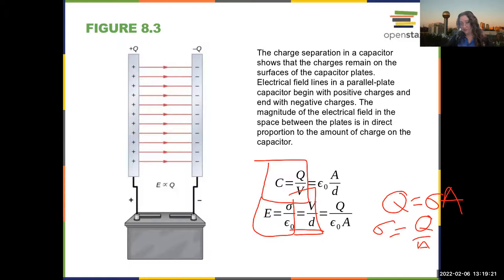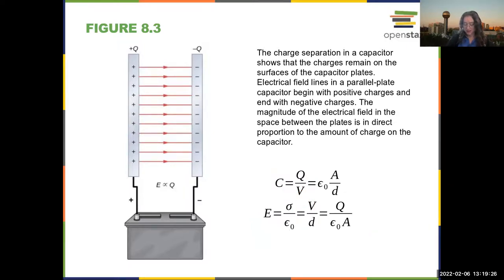The electric field is the voltage divided by the distance, so you can derive this equation. This is specifically for a parallel plate capacitor, whereas C = Q/V is the definition of capacitance. The electric field is proportional to the charge for these parallel plate capacitors.